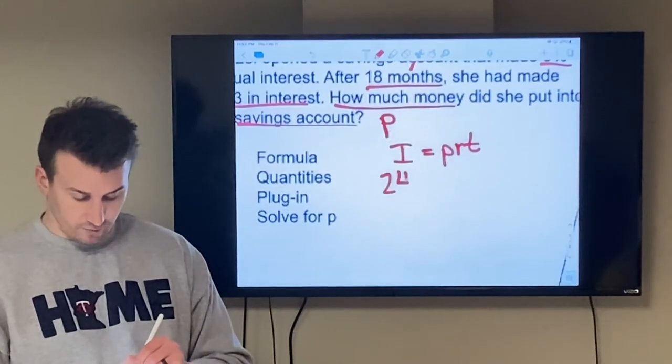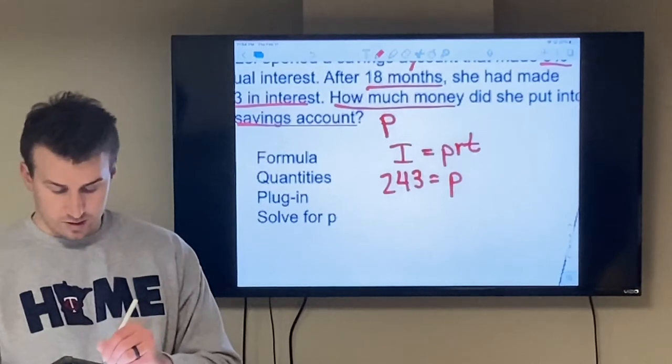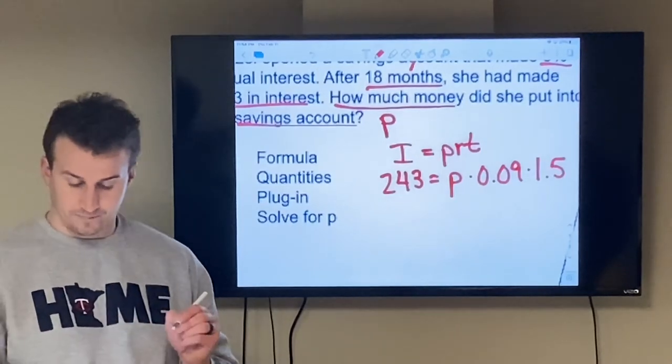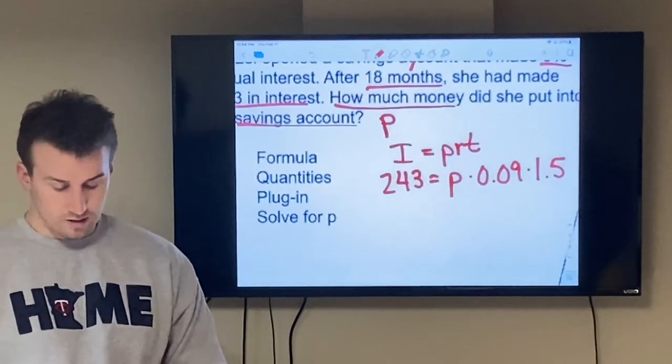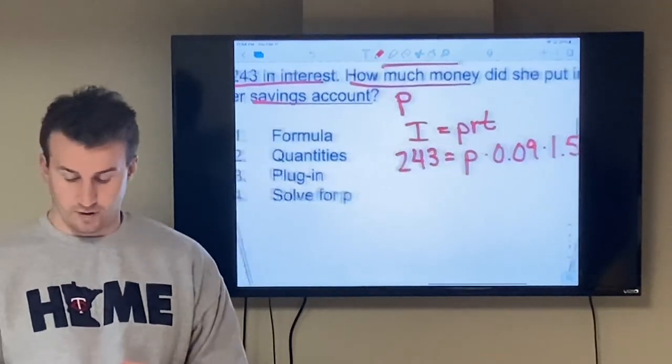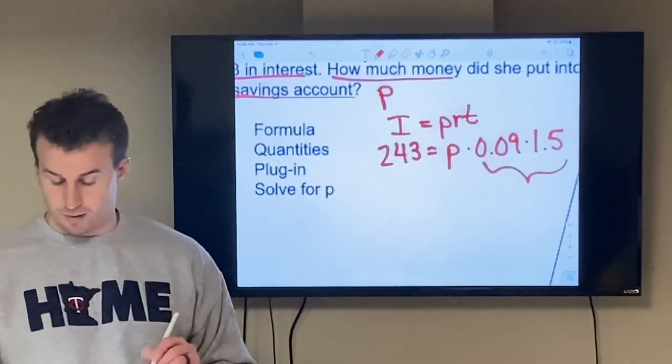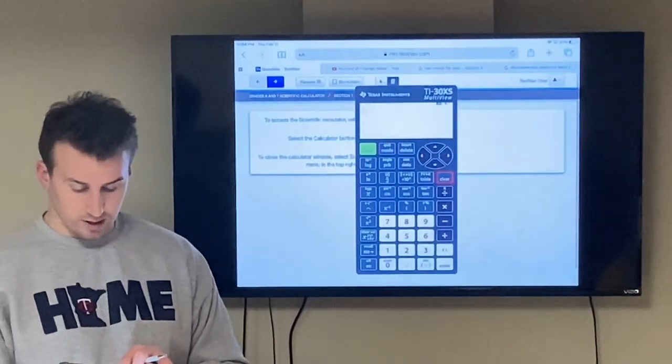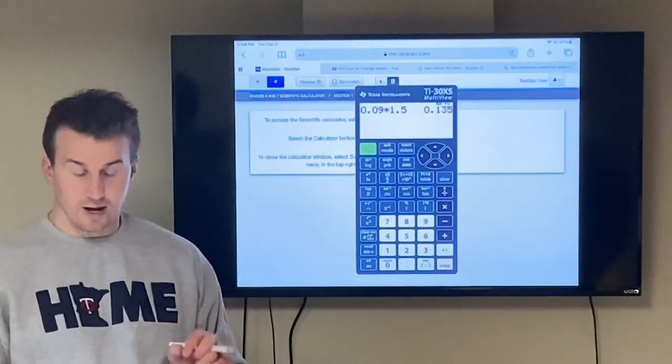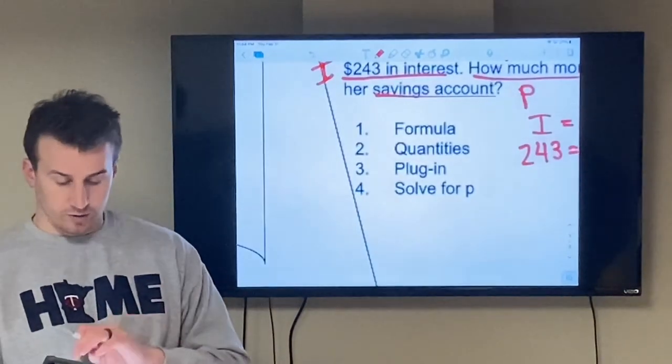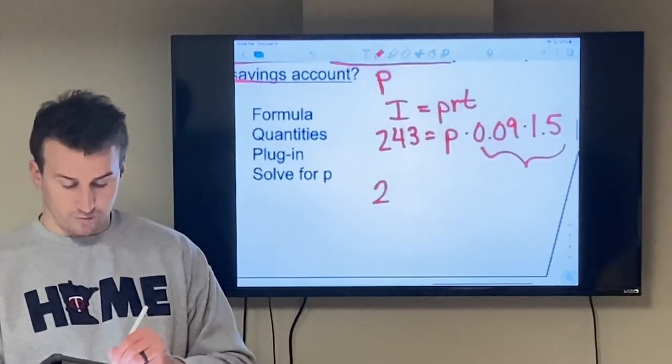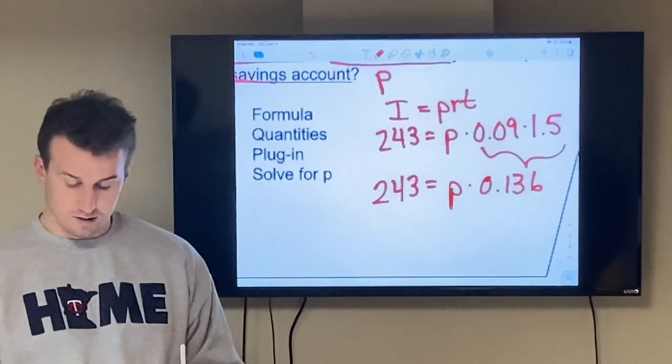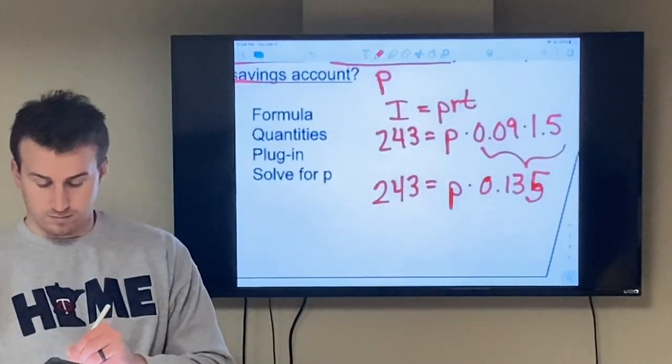So now I can replace everything I know for step two. So I rewrite this as $243 equals the principal, which I still don't know, times my rate, 0.09 times 1.5. So now step three, we've plugged in. Step four, we solve for the variable P. The first step, I need to multiply my decimals together 0.09 and 1.5. So I'm going to use my calculator, type in 0.09, multiply that by 1.5. I get 0.135. So I go back over to my example. And I have $243 equals the principal amount times 0.135.